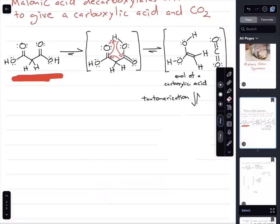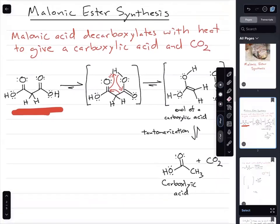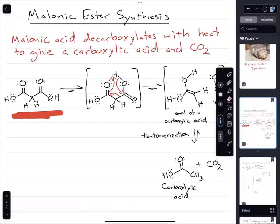That generates the enol of a carboxylic acid and eventually leading to CO2 and a carboxylic acid. So a malonic acid derivative, when heated, will generate a carboxylic acid and CO2.